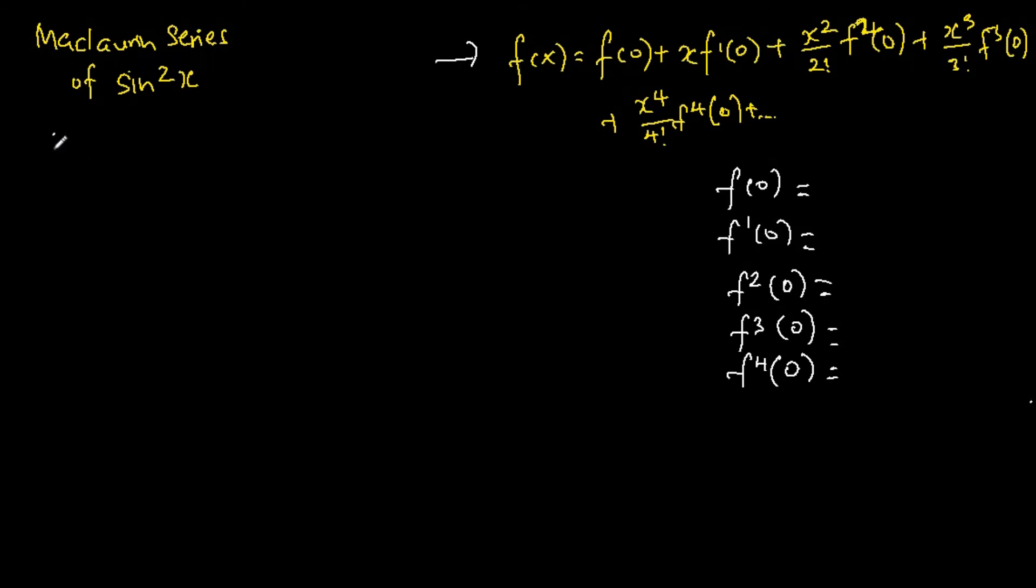So let's begin by defining the function f(x) to be equal to sine squared x. And when we differentiate the function one time, we will get 2 sine x cosine x. Pretty straightforward.